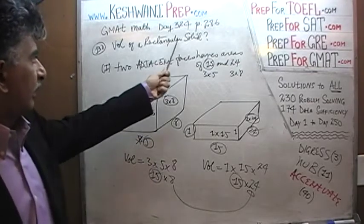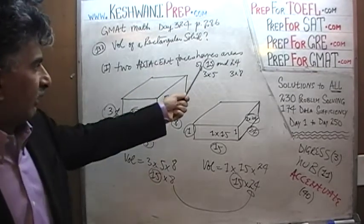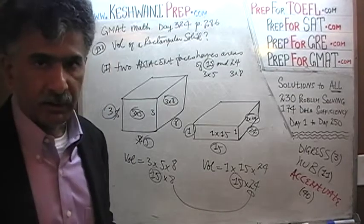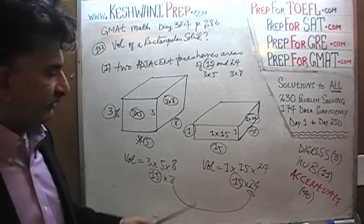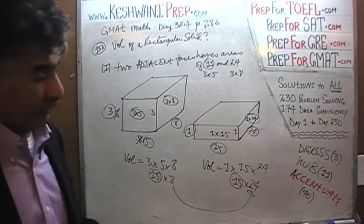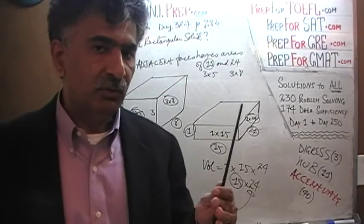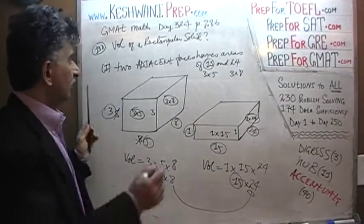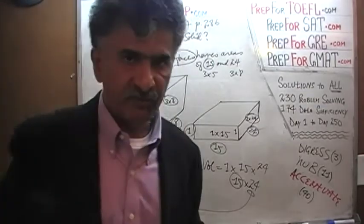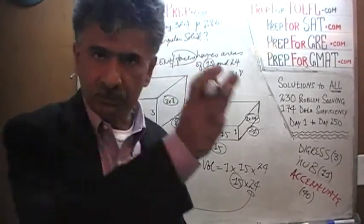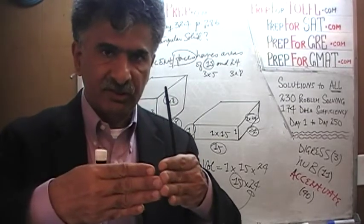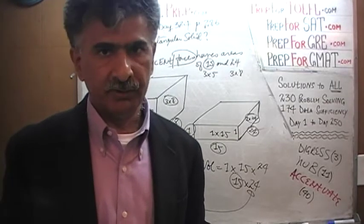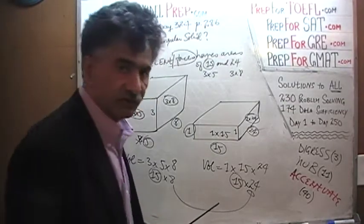We cannot tell what the volume of the rectangular solid is simply by knowing that the two adjacent faces have areas of 15 and 24. This is not enough — there are infinite possibilities. We could have made this side equal to half, or 2, or 3 — infinite possibilities. Simply knowing the area of the two adjacent faces — and by the way, these are called faces, not sides; a rectangular solid has 6 faces: front, back, top, bottom, left, and right — simply knowing that two adjacent faces have areas of 15 and 24 does not enable us to find the volume. The first statement by itself is not enough.